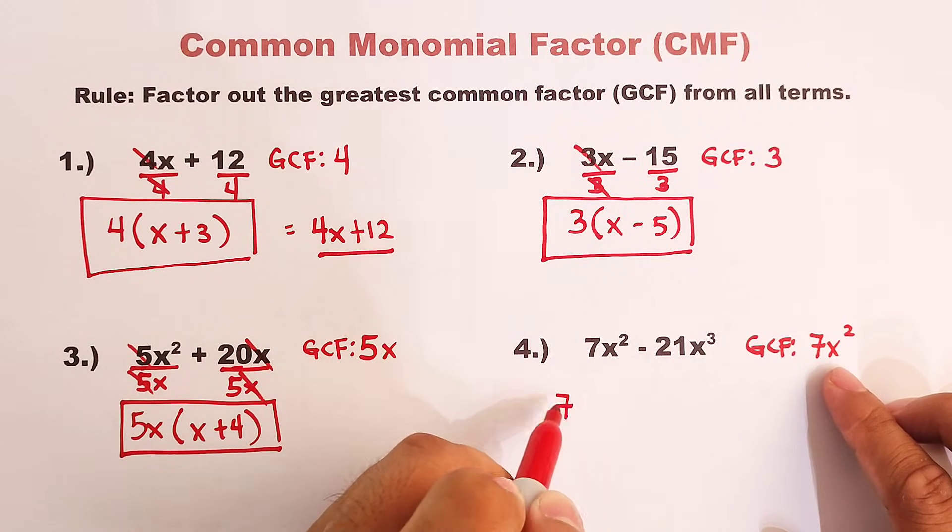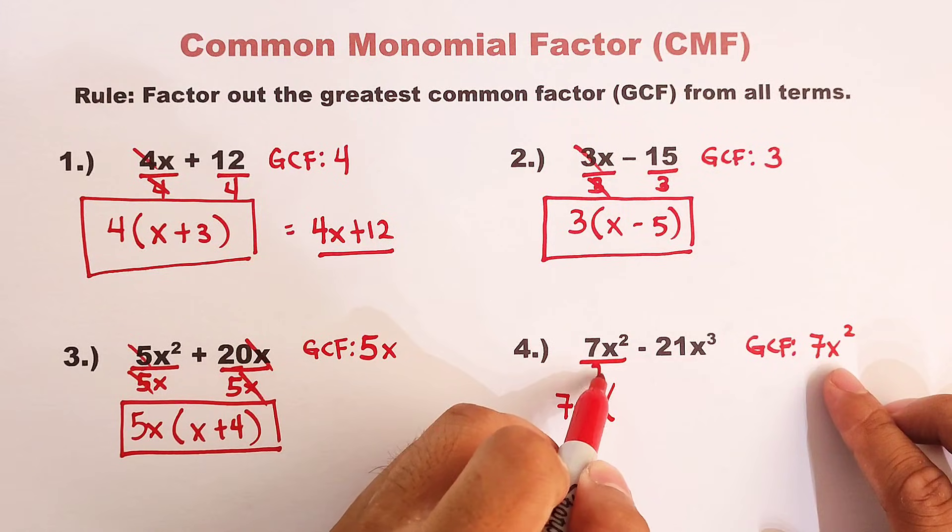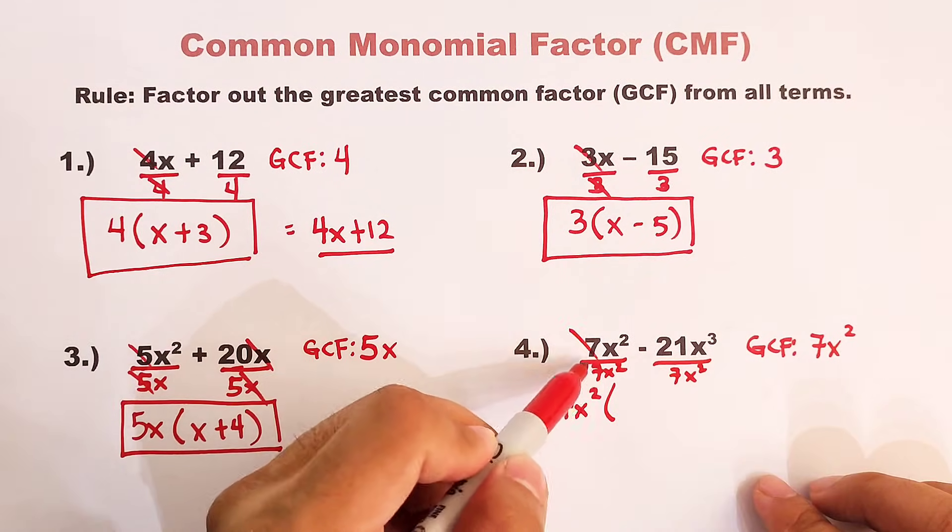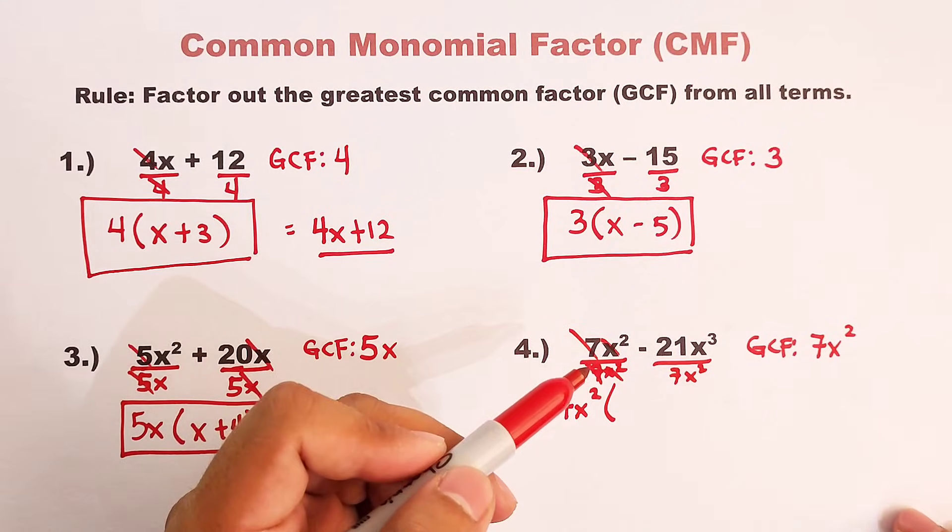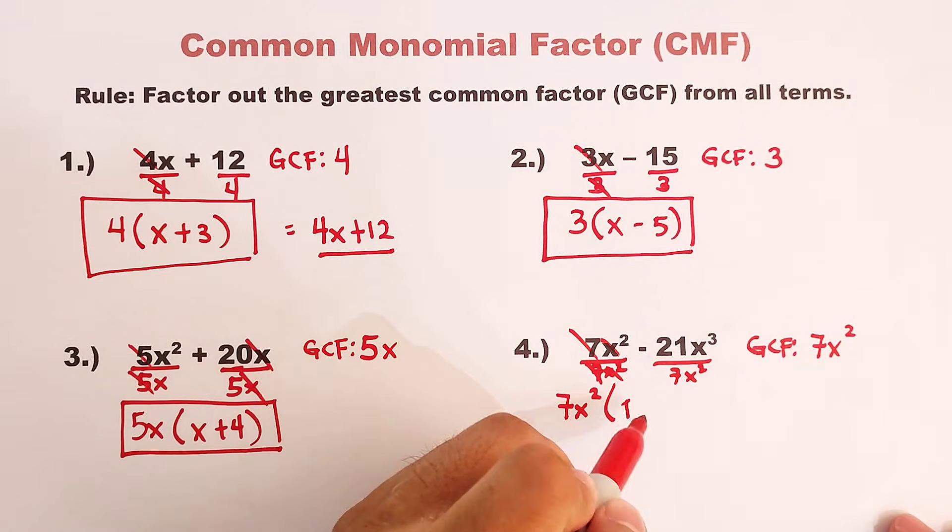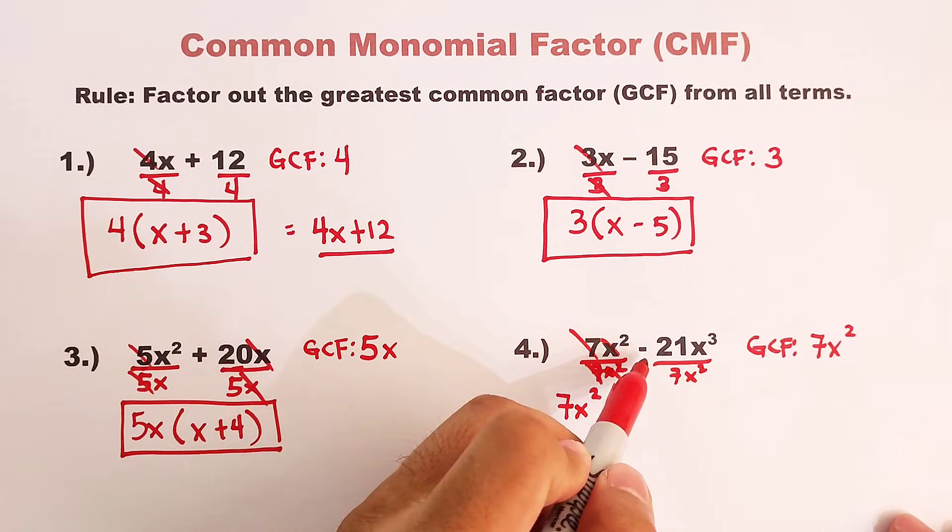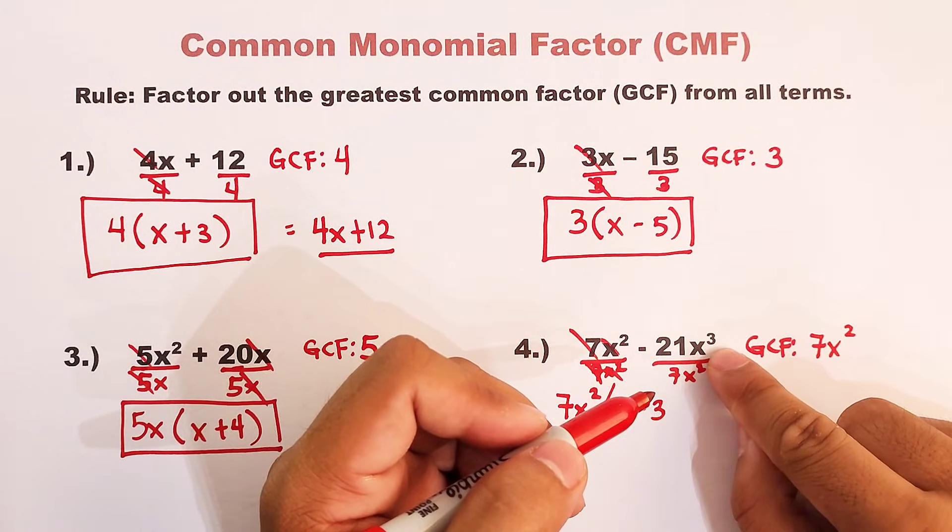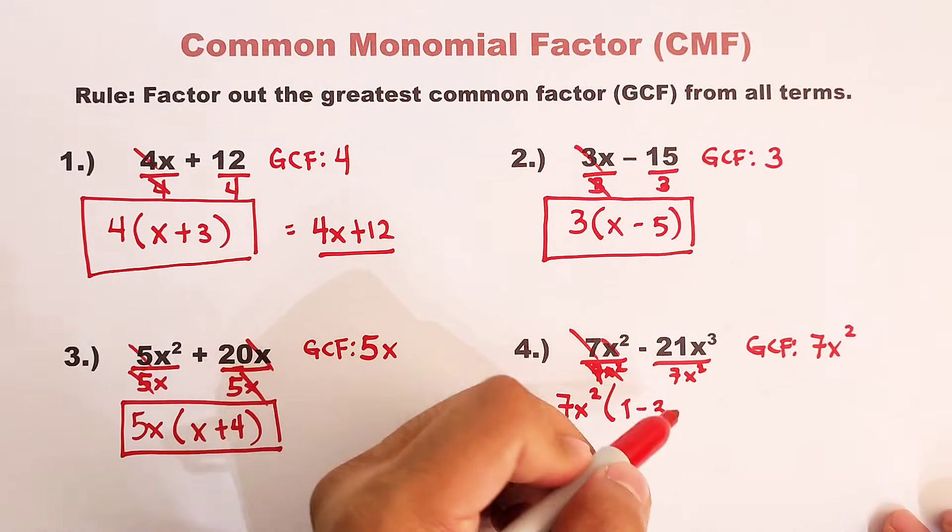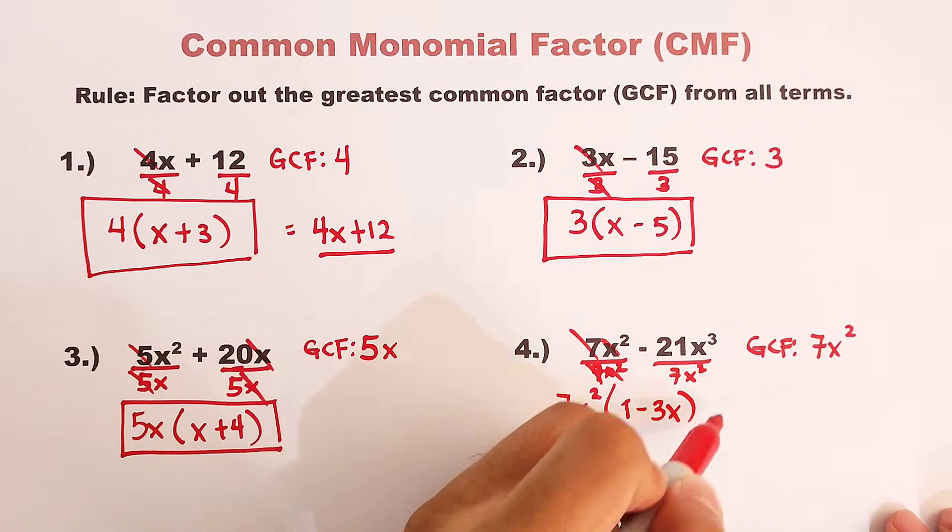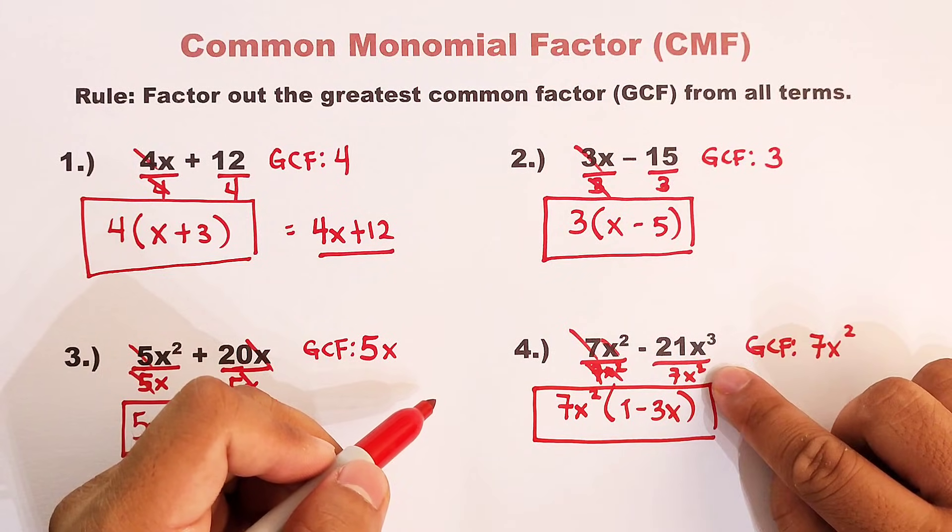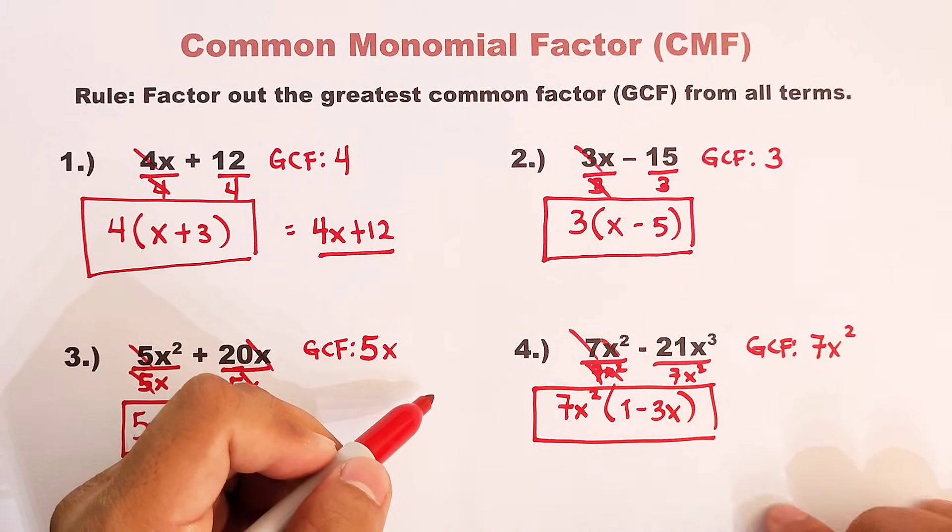This will serve as the first factor. And divide this by 7x squared. Divide this by 7x squared. So we have 7 divided by 7. Cancel this out. And cancel this out. What we have here is 1. Then negative 21 divided by 7. That would be negative 3. And as for the variables x squared, x cubed over x squared, we have simply the variable x. Because we will subtract the exponents 3 minus 2. That would be equal to 1.